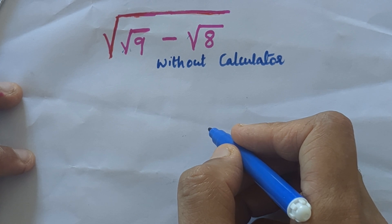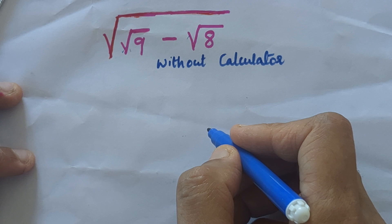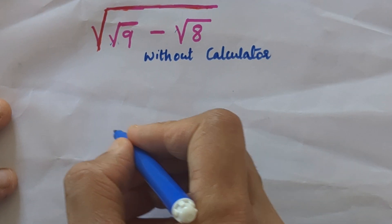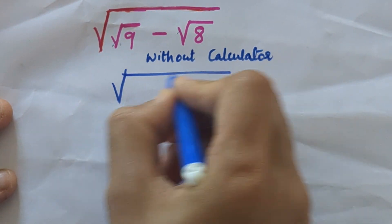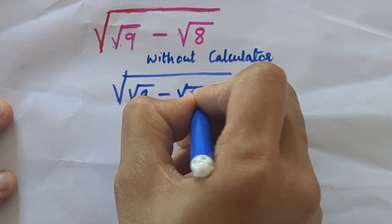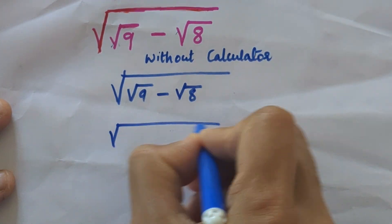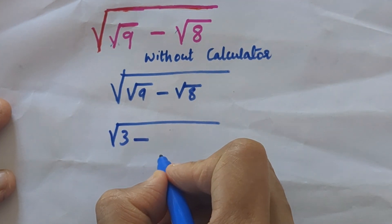Let's rewrite the question: square root of root 9 minus root 8. Root 9 is 3, so 3 minus root 8 can be written as, what are the factors of 8?